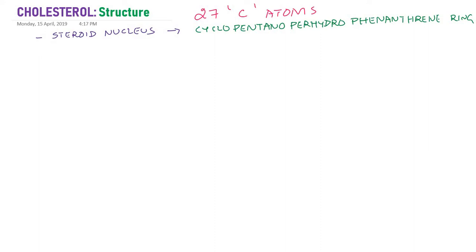Basically it contains four rings: A, B, C, and D. The first three rings are six-membered benzene rings. When two benzene rings are fused, we call it a naphthalene ring. But in cholesterol we have three benzene rings, so the third benzene ring is added. This arrangement of rings A, B, and C is called the phenanthrene ring.